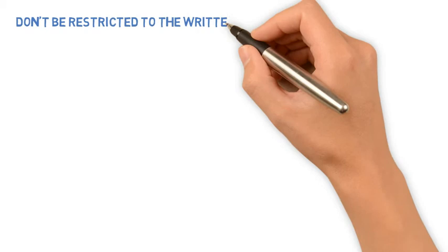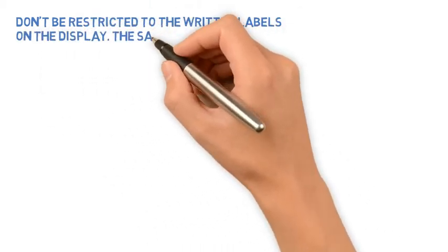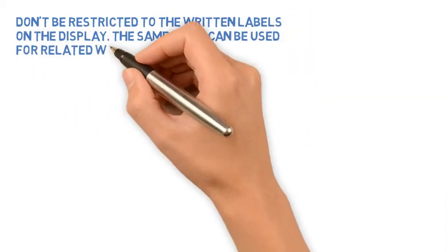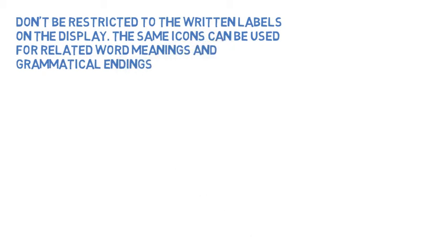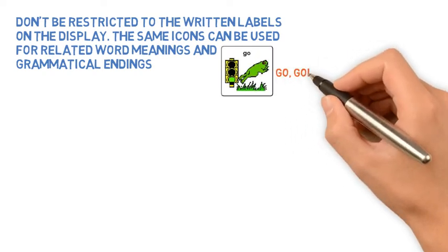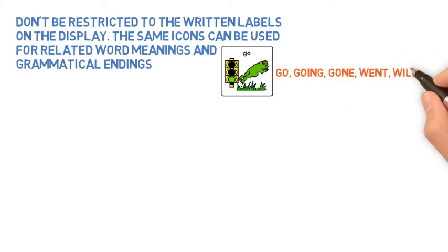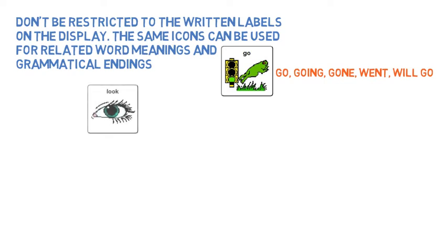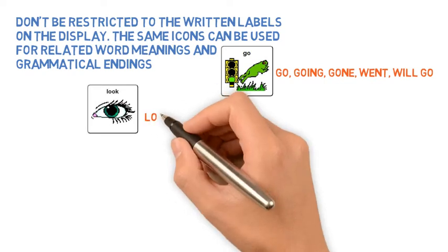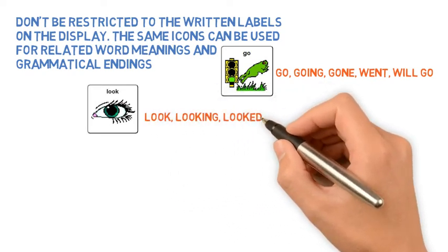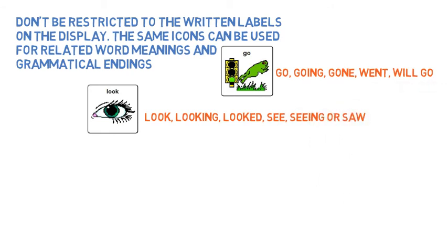When modeling, don't be restricted to the written labels on the display. You can use the same icon or symbol for related word meanings and grammatical endings. For example, the icon representing the word 'go' can be used to express go, going, gone, went, or will go. The icon representing 'look' can be used to express look, looking, looked, see, seeing, or saw.